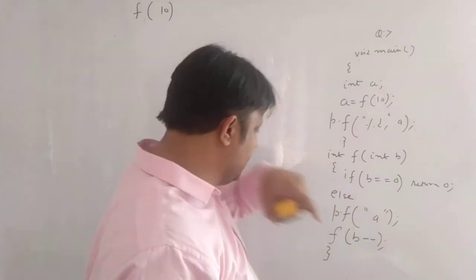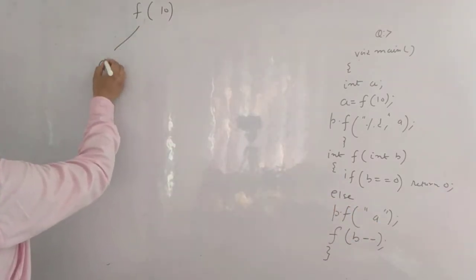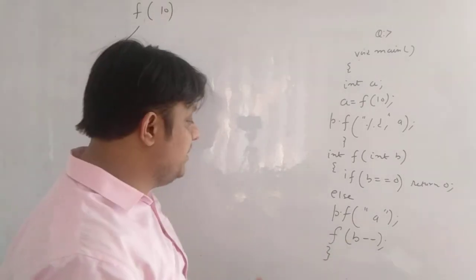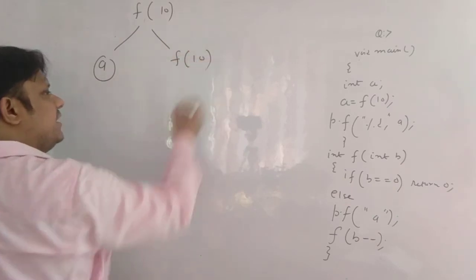Fine. So if b == 0, condition falls as printf a. So you print a. It is f(b--). It is not f(--b), it is f(b--). So again it is f(10) only.